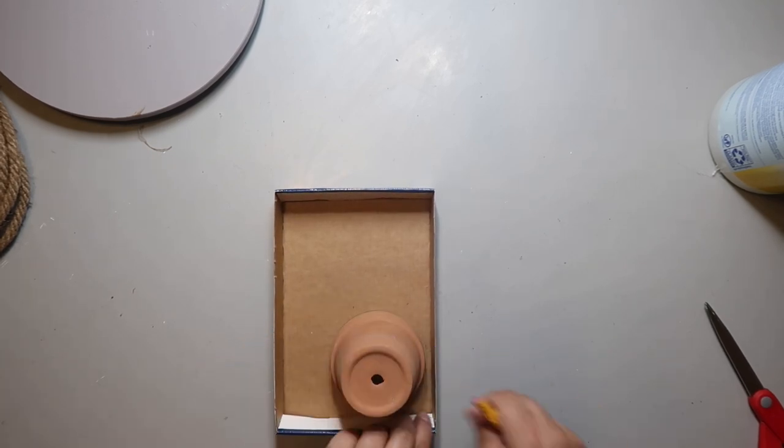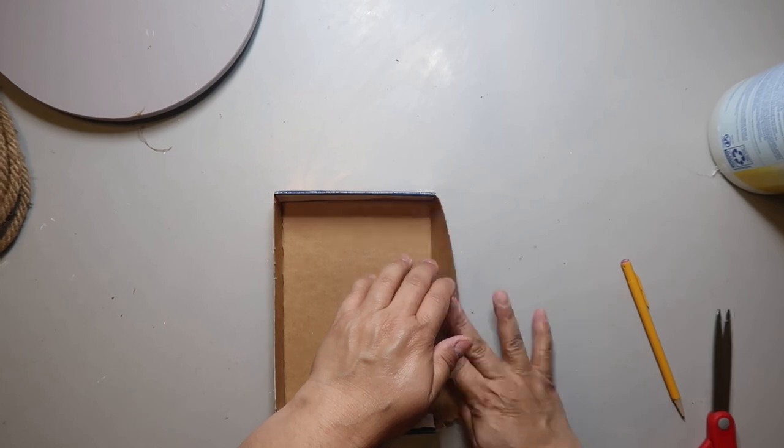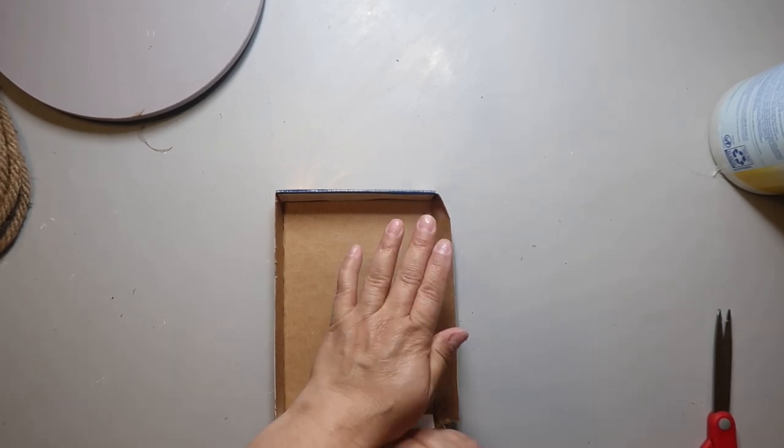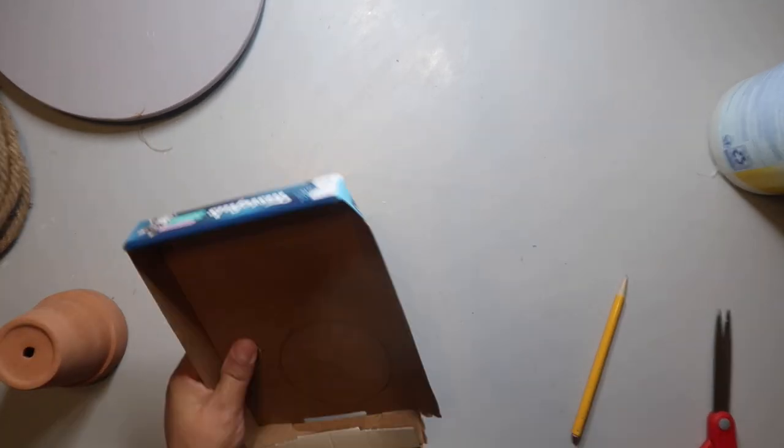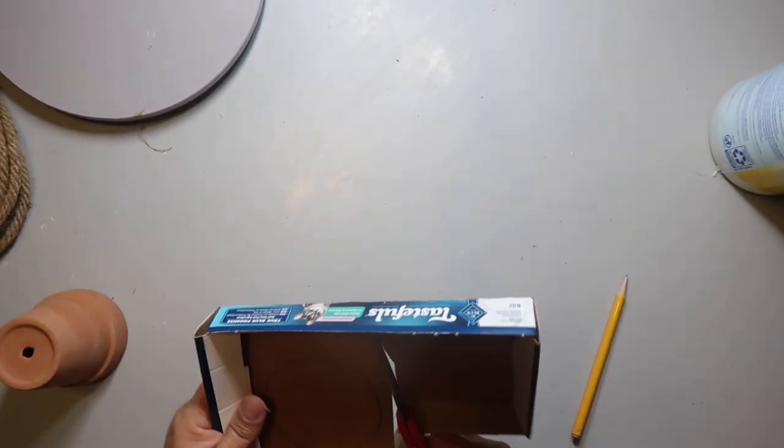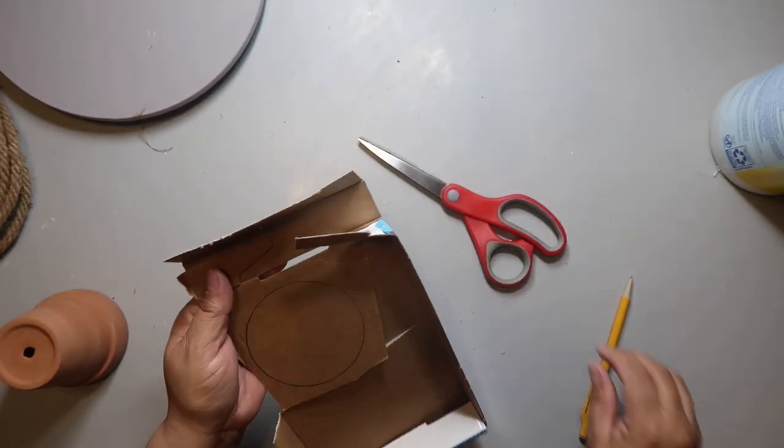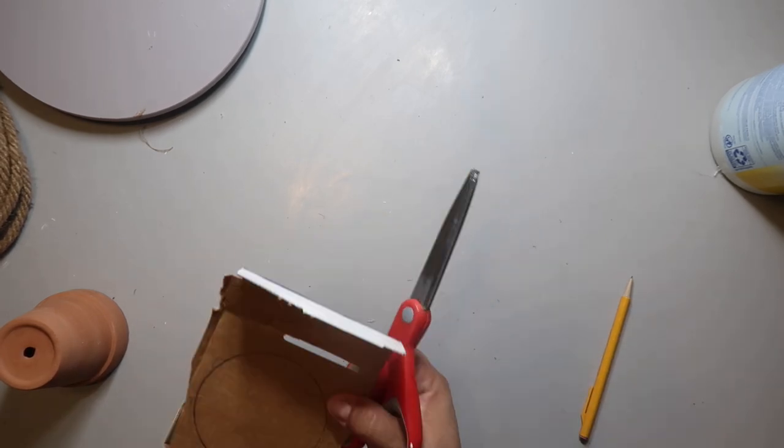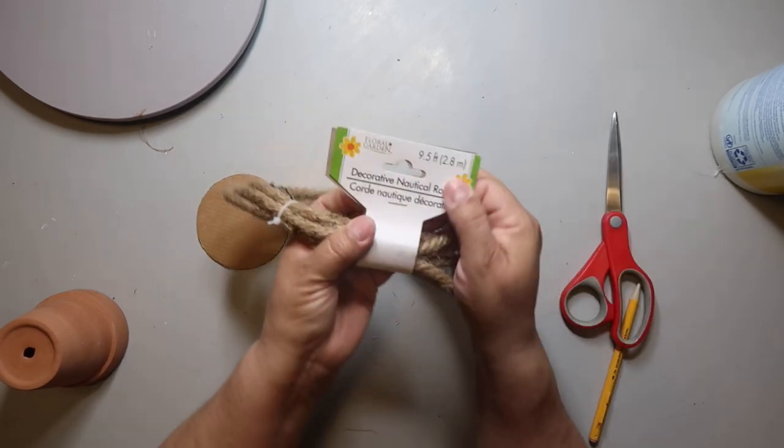I'm using some scrap cardboard and I'm using a terracotta pot to trace out a circle. We're going to make a super easy rope basket and the size of your circle will determine the width of your basket. The size of the circle is how big your basket is going to be.